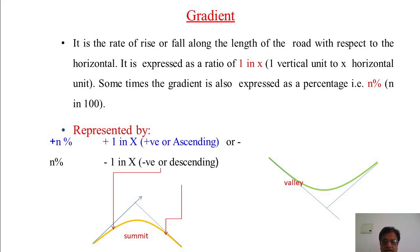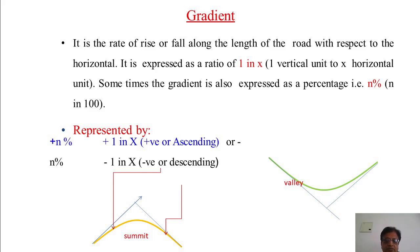Let us see the different types of gradient and how gradients are represented. Gradient is the rate of rise or fall along the length of the road with respect to the horizontal. It is expressed as a ratio of 1 in x, that is 1 vertical unit to x horizontal units. It is also expressed as percentage n, meaning n in 100. Ascending gradients are represented by a positive sign and descending gradients by negative. The ascending gradient curve is called a summit curve and the descending gradient is called a valley curve.